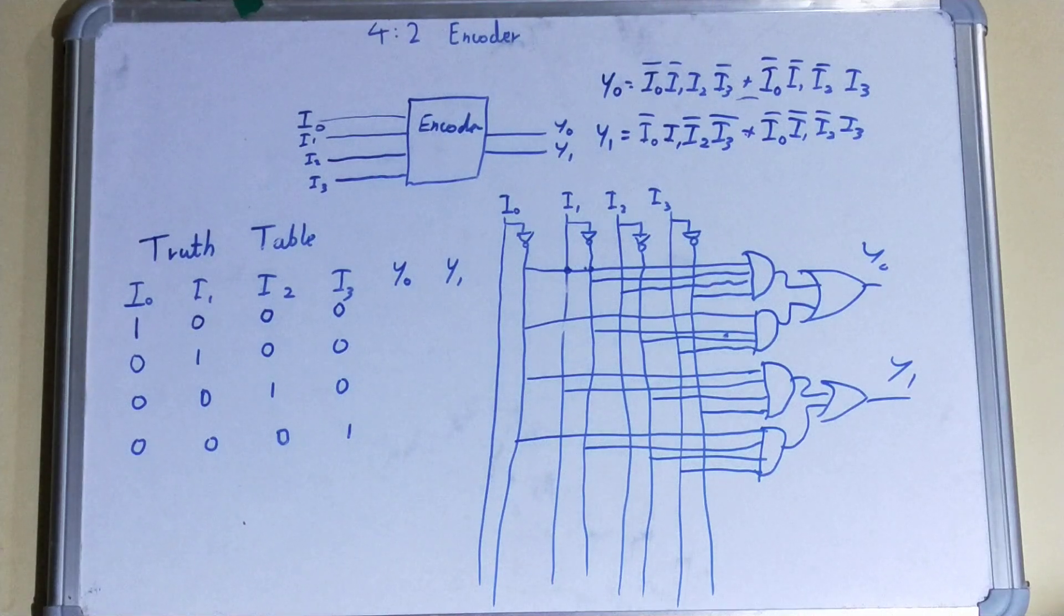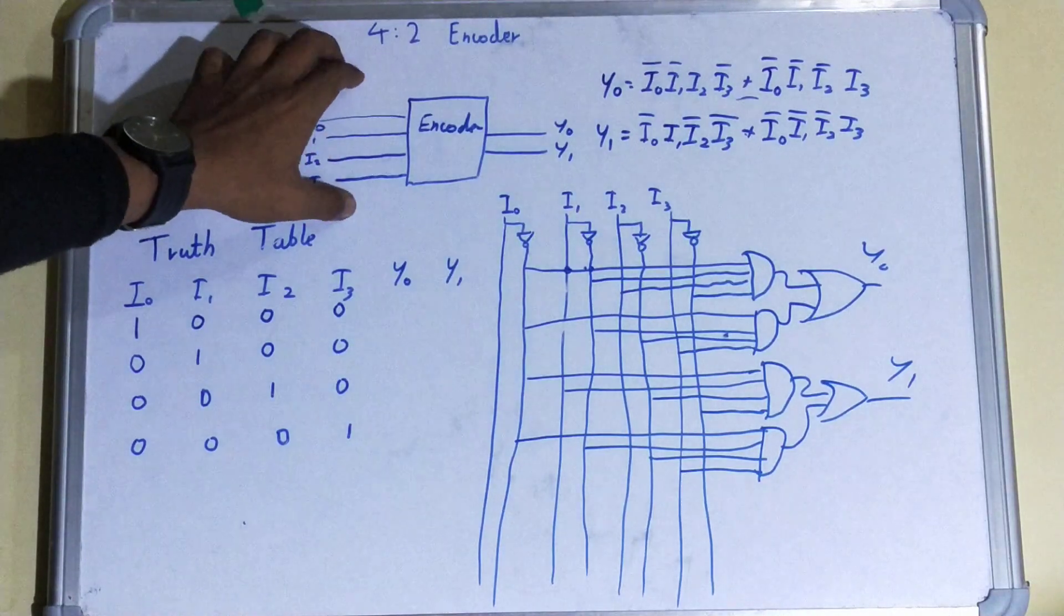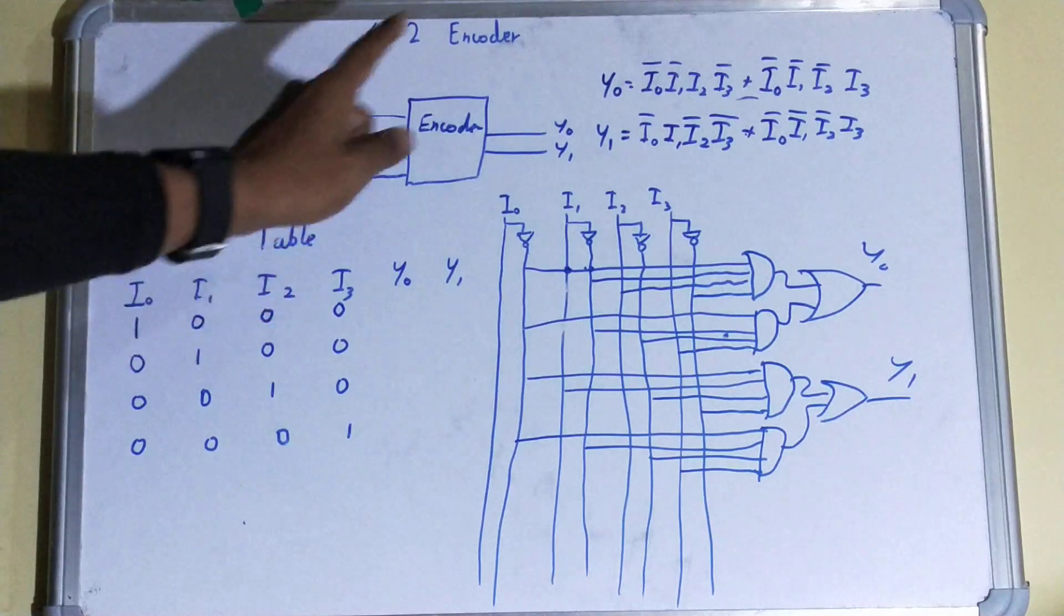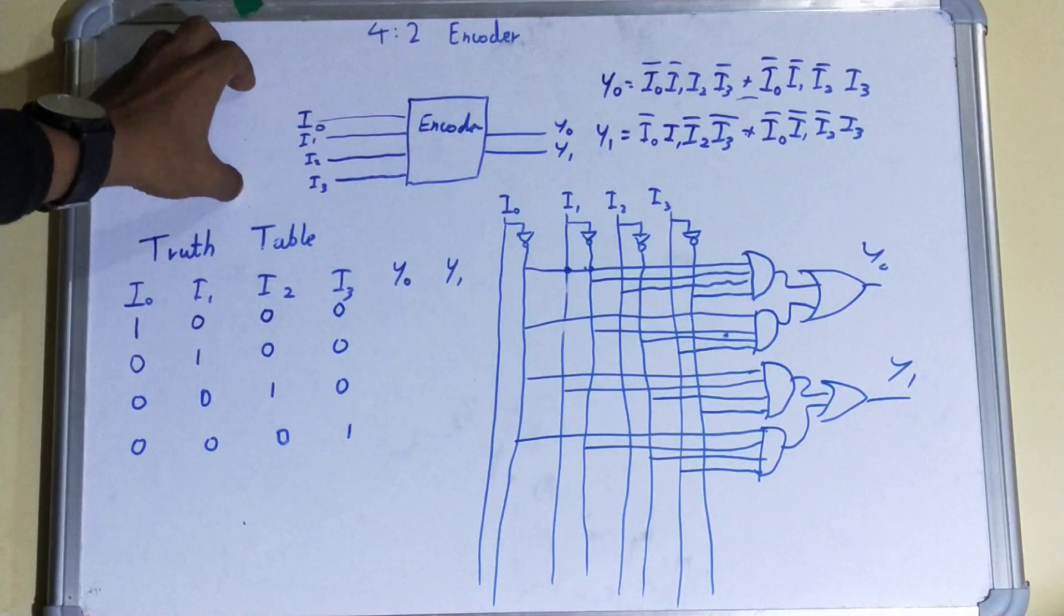Hello friends, in this video I'll be explaining 4-to-2 encoders. Let's start. What are encoders? Encoders are multiple input, multiple output combinational circuits where your number of input lines is double your output lines. That is, if your input lines are 2^n, then your output lines will be n.